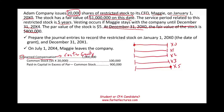Then we're going to credit common stock, as if we're issuing the stocks — 20,000 shares times $5 par value equals $100,000 — and anything that's left will be a plug to paid-in capital in excess of par. This takes place January 1st, 20X0.